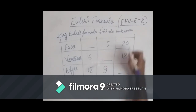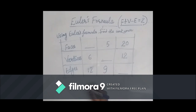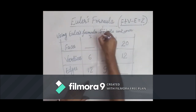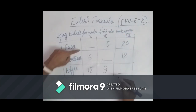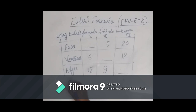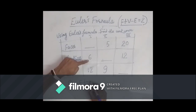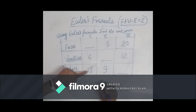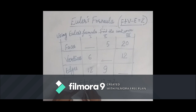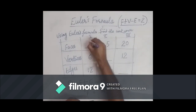Using Euler's formula F plus V minus E equals 2, we will find some missing entries. In the first one, faces are unknown, vertices are 6, and edges are 12. So F plus 6 minus 12 equals 2, which gives F equals 2 plus 12 minus 6 equals 8. So we enter 8 for the number of faces.